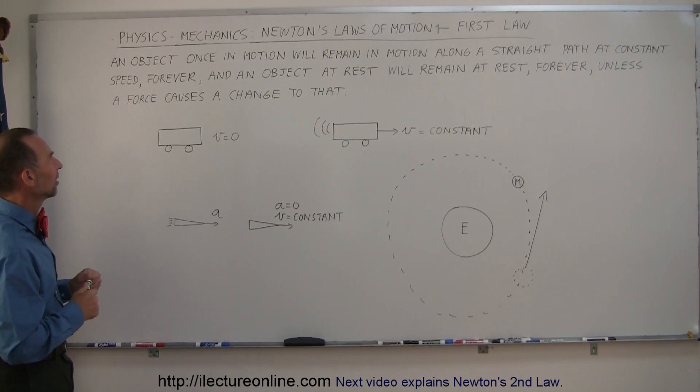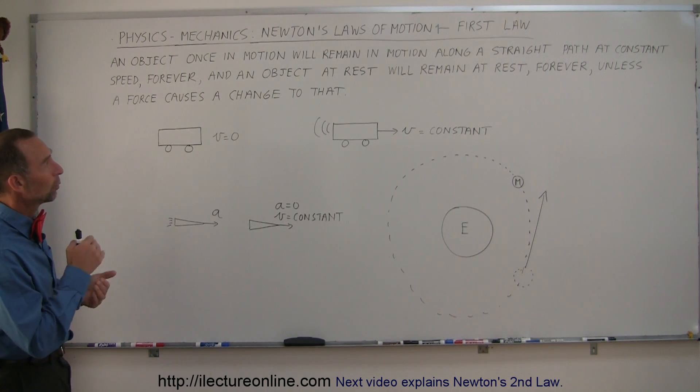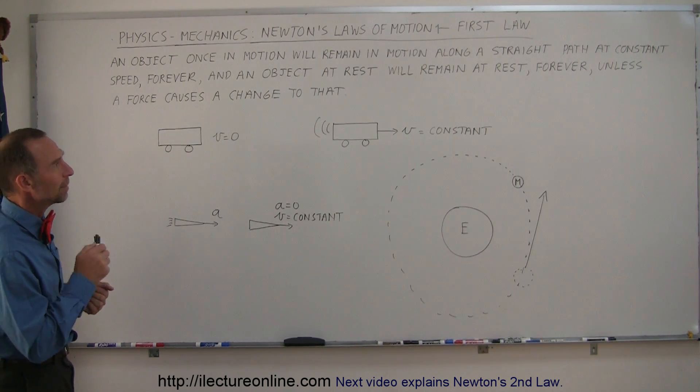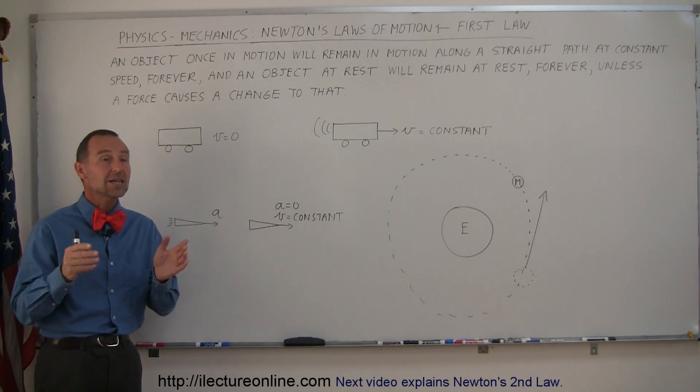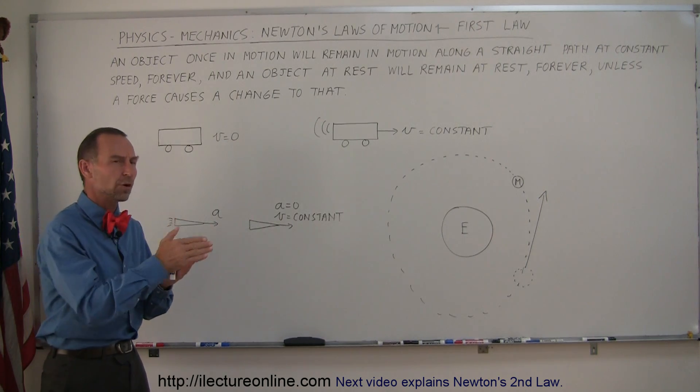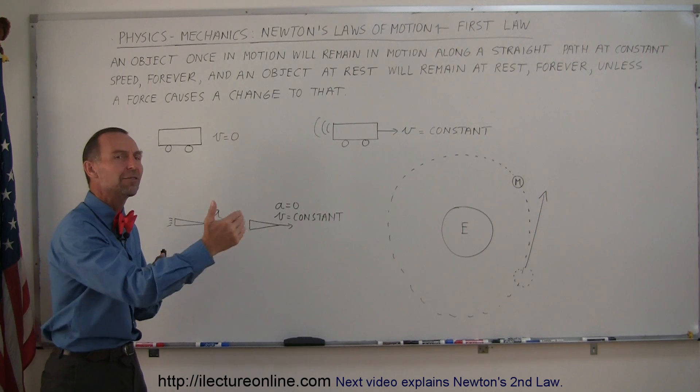Let's start with the first law. It states, paraphrased: an object once in motion will remain in motion along a straight path at constant speed forever. Once an object is in motion, it will continue in the same straight path at the same constant speed forever.